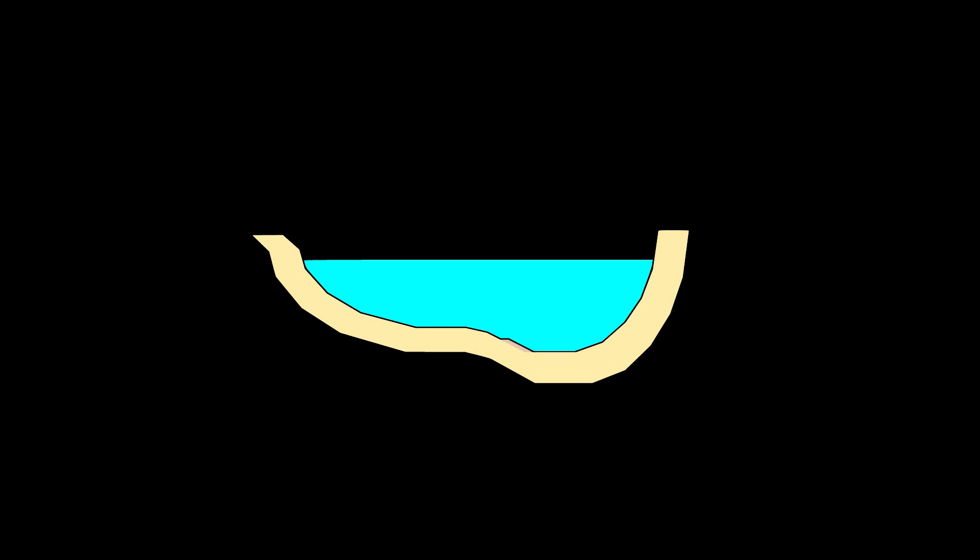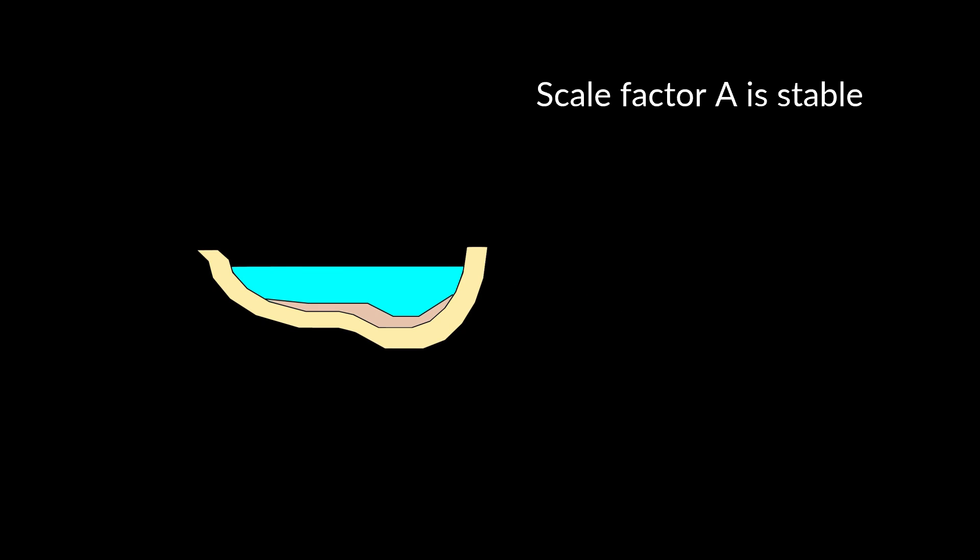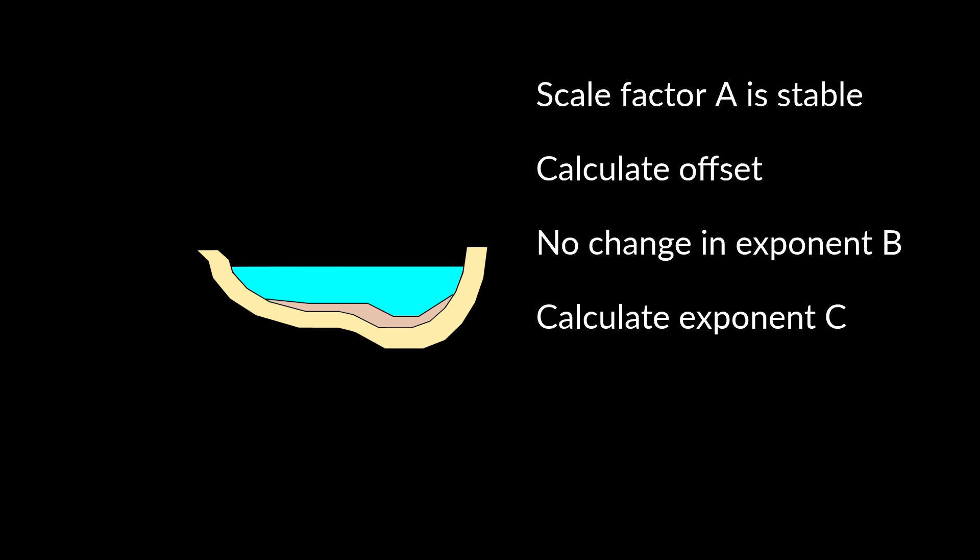In this example, sedimentation has changed the cross-section, but slope, bed material and sinuosity have remained the same. Thus, the scale factor A is stable. Offset has changed, but we can calculate the offset with the observed cross-section. Since flow conditions have remained stable, there is no change in exponent B, and we use the new cross-section to calculate exponent C.